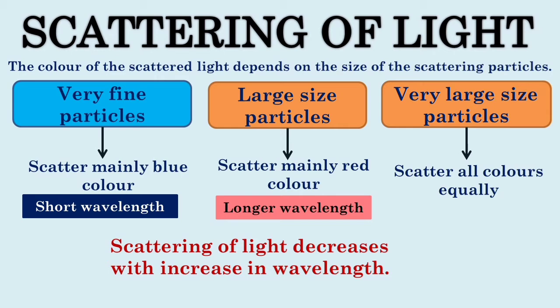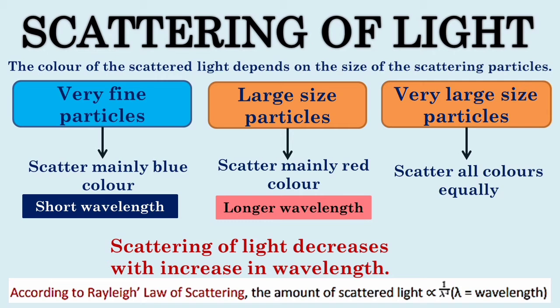A British physicist Lord Rayleigh gave a scattering law according to which amount of scattered light from fine scattering particles is inversely proportional to the fourth power of the wavelength of light.